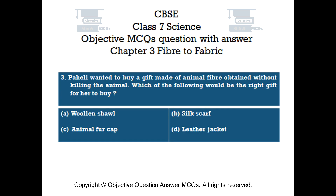Question number 3. Pahali wanted to buy a gift made of animal fiber obtained without killing the animal. Which of the following would be the right gift for her to buy? Option A Woolen Shawl, Option B Silk Scarf, Option C Animal Fur Cap, Option D Leather Jacket.